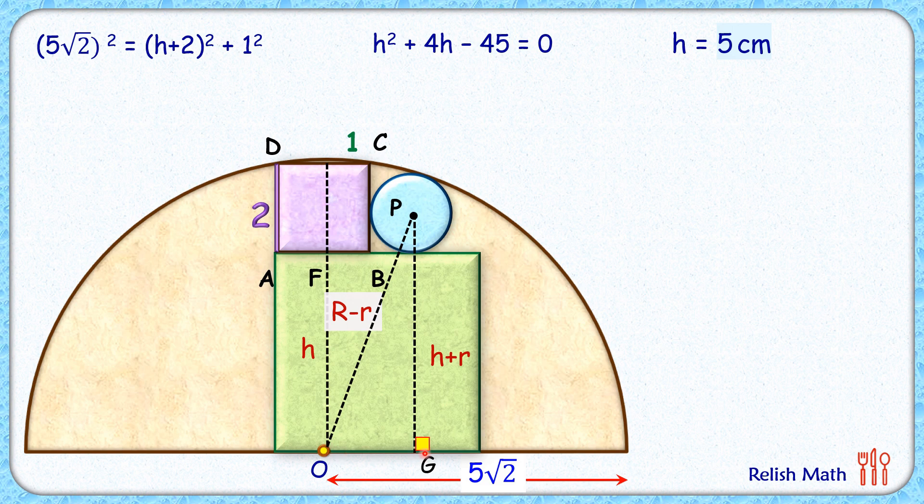How about OG? OG length is this length here. Now here this length is 1, that's half of your square side length, plus radius of this blue circle that's r. So OG length is 1 plus r.